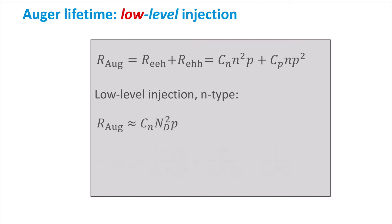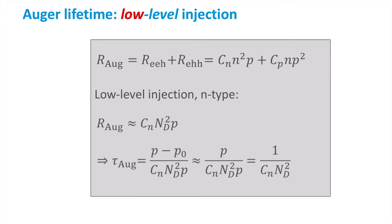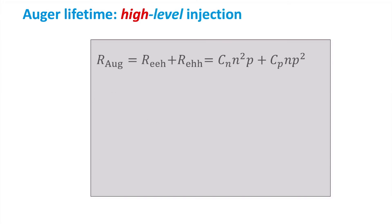Taking into account that the hole concentration P is much larger than the thermal equilibrium hole concentration P0, we can find the lifetime for Auger recombination fairly straightforwardly. We see that in this case the lifetime is inversely proportional to the donor concentration squared. The situation is profoundly different when we consider high-level injection. In that case, we need to take into account both terms.